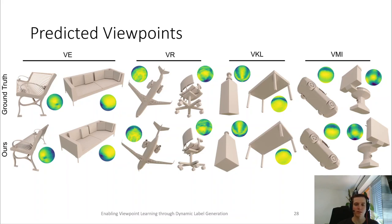However, in some cases these predictions can be different from the ground truth optimal views, as our dynamic label generation allows the selection of different high quality labels than the ground truth optimal view. This can be especially seen for the toilet model on the right, where our label selection strategy chooses the view from the left of the toilet instead of the ground truth right view.